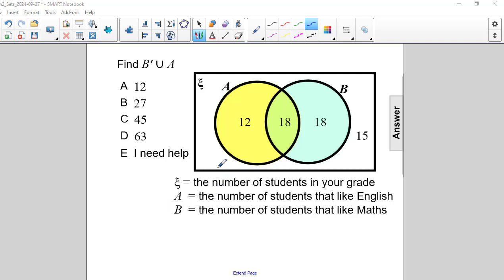So first of all for set A we have two parts to it. There are 12 students who like English only and there are 18 students who like English and math. So the total number is going to be 30.